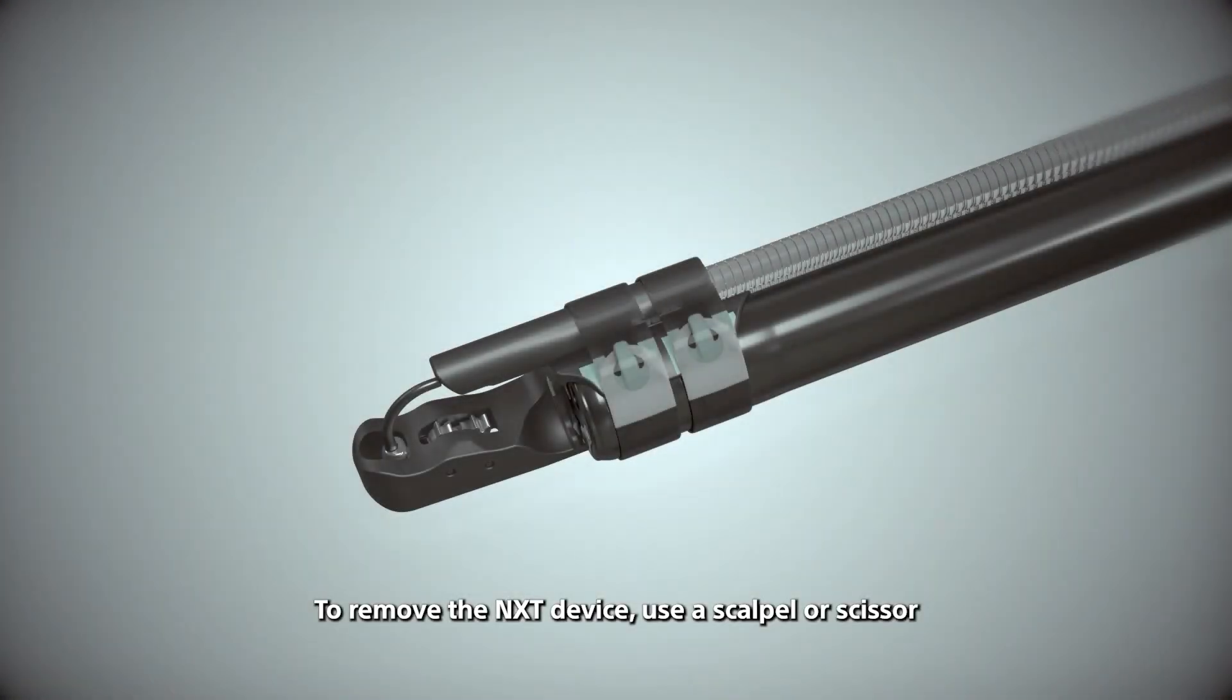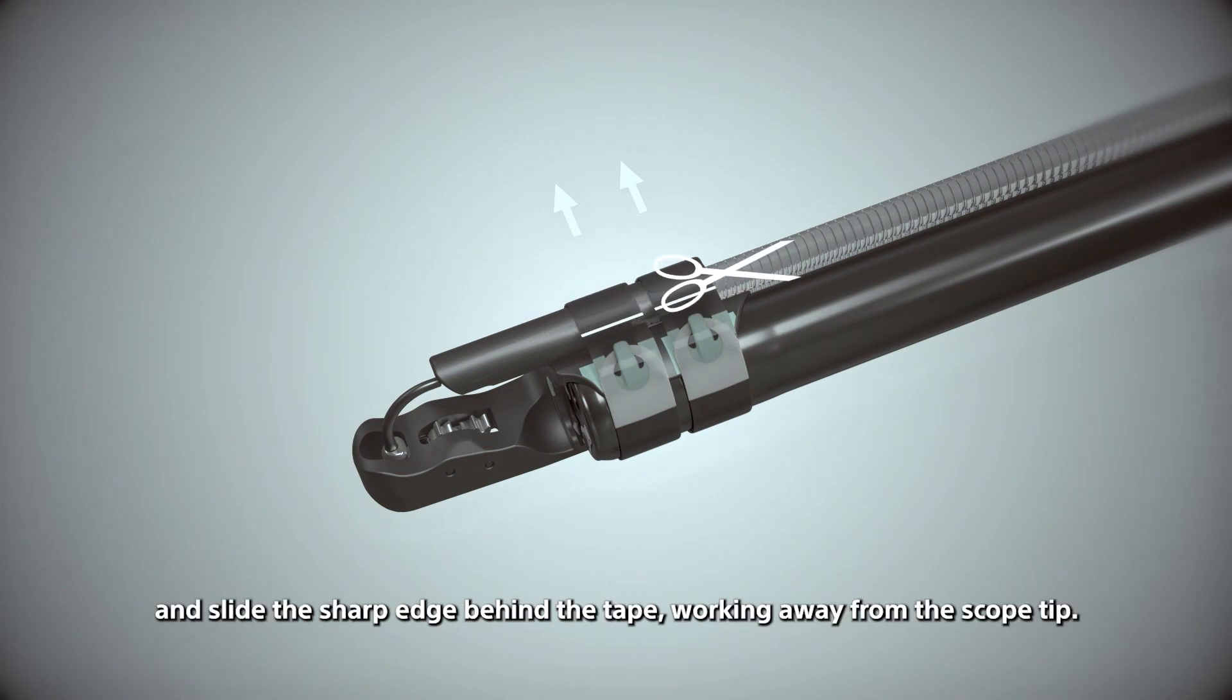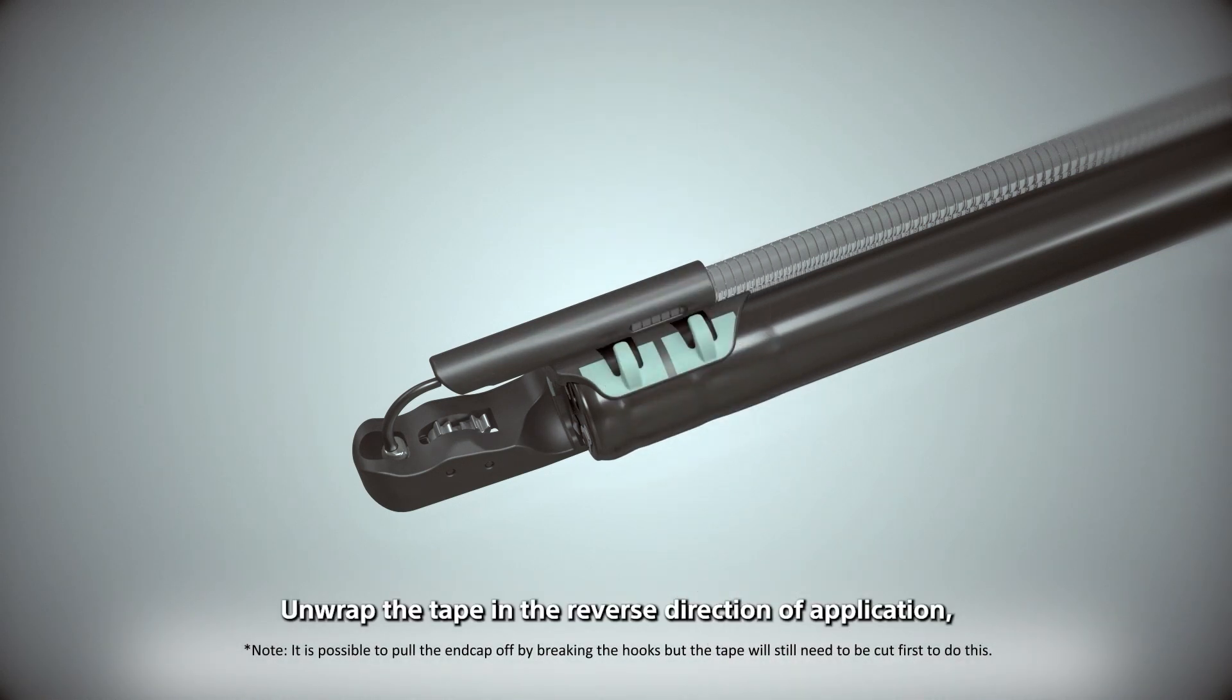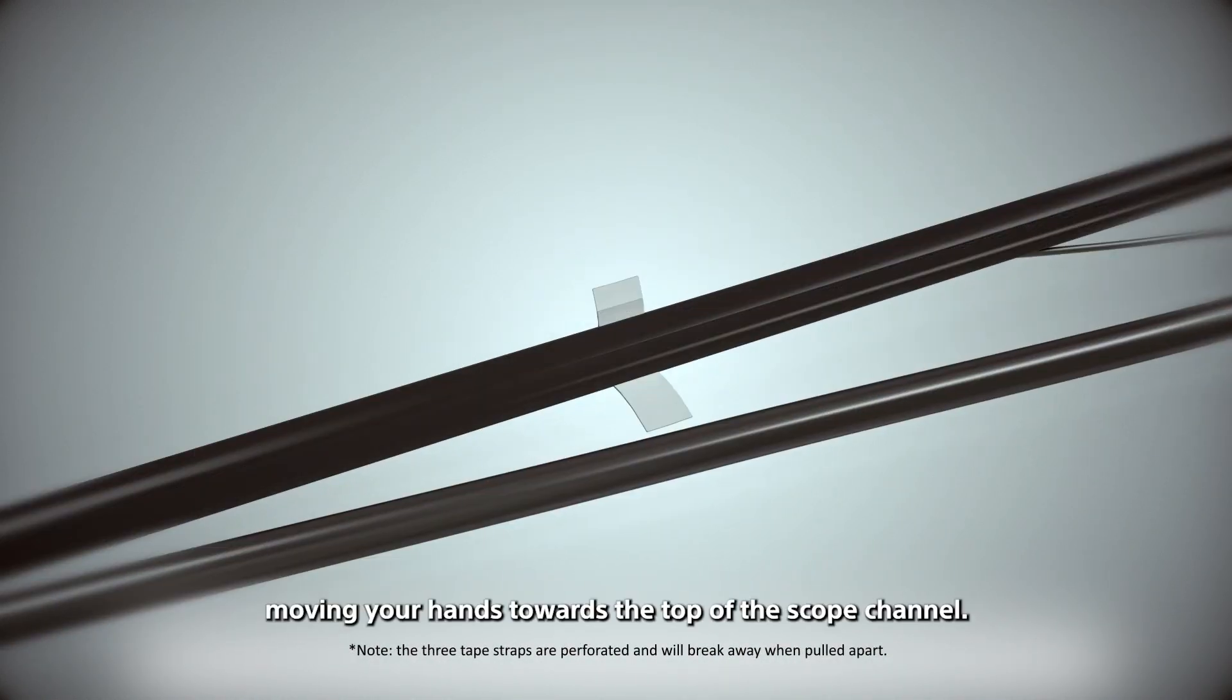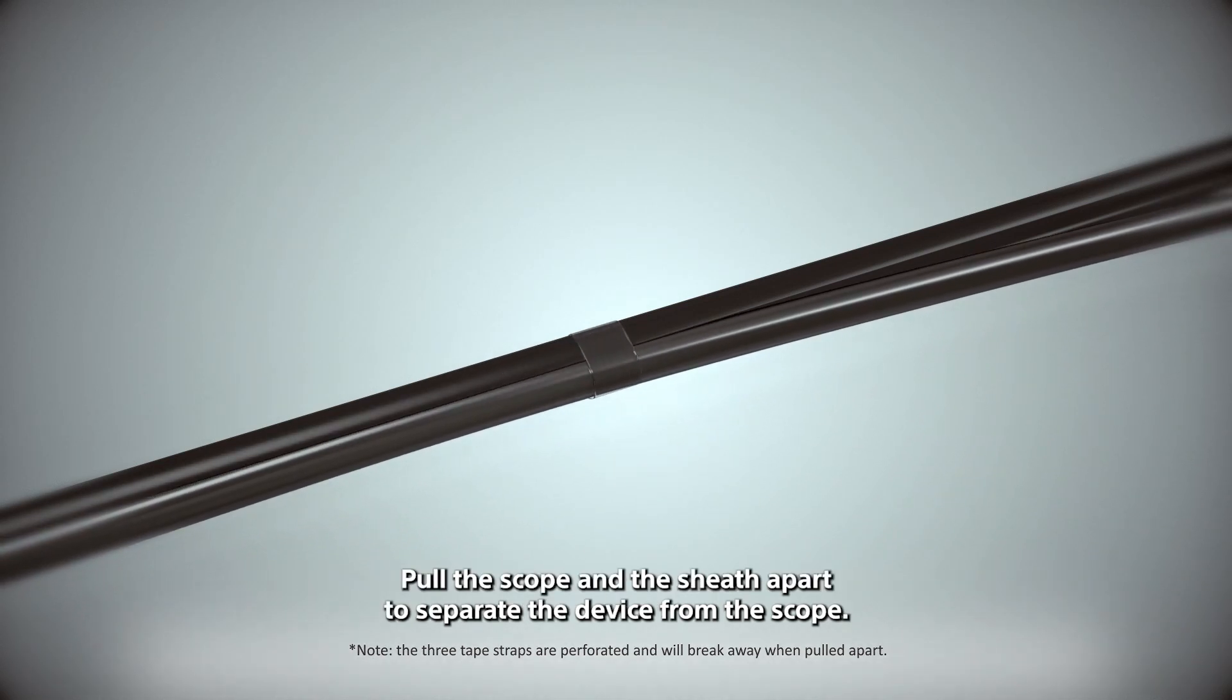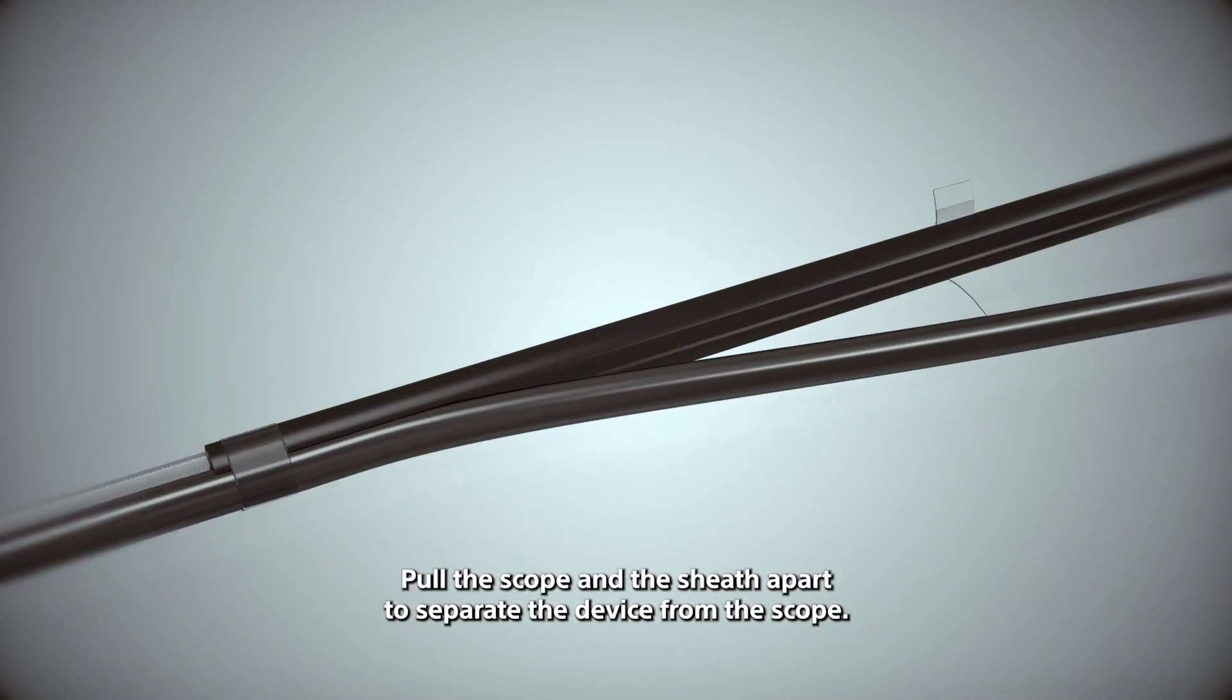To remove the NXT device, use a scalpel or scissor and slide the sharp edge behind the tape, working away from the scope tip. Unwrap the tape in the reverse direction of application, moving your hands towards the top of the scope channel. Pull the scope and the sheath apart to separate the device from the scope.